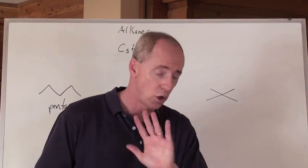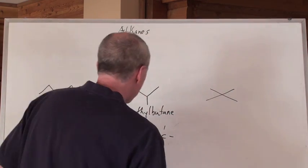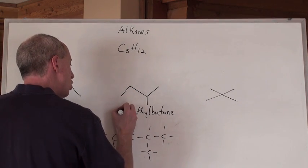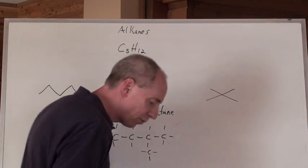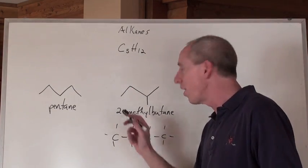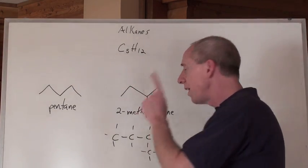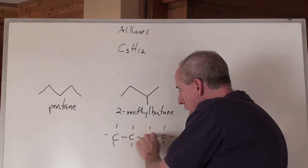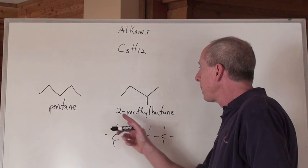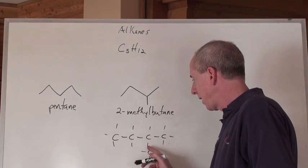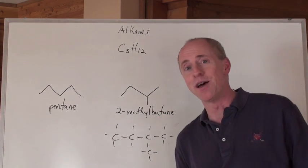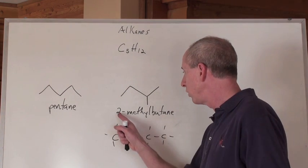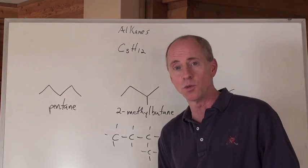But here's what you can say. No problem here. The branch is on the second carbon. So the number that we're going to put here is two and then a hyphen. We separate numbers from letters with hyphens. And we say, we've got a methyl branch that's on this butane, and so it's a 2-methylbutane. Even though if we put it here, it would still be 2-methylbutane. We'd just be counting the lowest number possible.